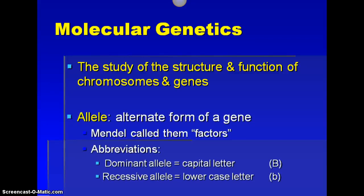So first, we have the term allele. An allele just means the alternate form of a gene, or the different options for a trait. Another way you could write it is just different options for a trait.